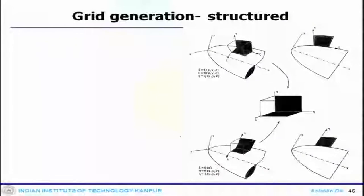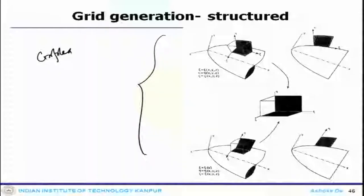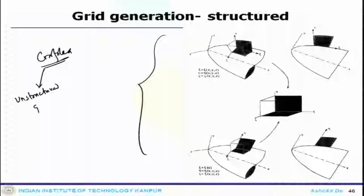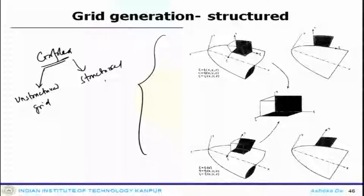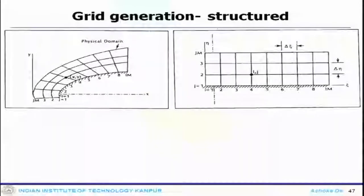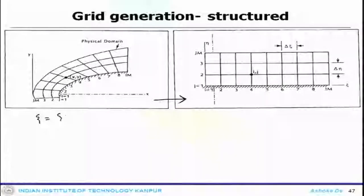Now, grid generation — if you recall, all your realistic complex grids would be of this nature. When you have a complex grid of this kind, either you have the option of generating an unstructured grid, or you can generate a structured grid and then transform this system to a psi-eta system, or the regular coordinate system. You have a physical domain that transforms to a computational domain, and it essentially goes to a uniform psi-eta direction, where psi can be x, y and eta would be x, y.